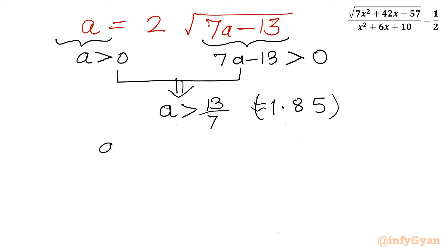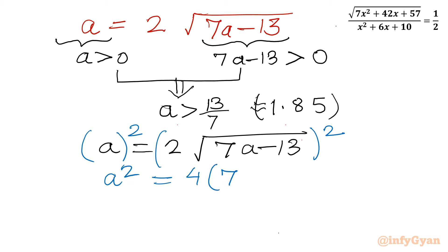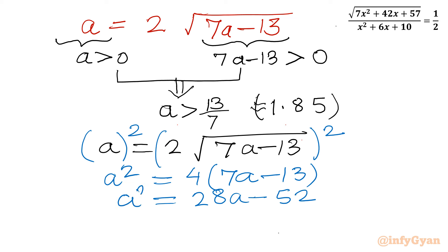Let us solve this quadratic equation: a = 2 times square root of (7a - 13). Now I will square both sides: a² = 4 times (7a - 13), which gives a² = 28a - 52. Taking all terms to the LHS, I can write one quadratic: a² - 28a + 52 = 0.